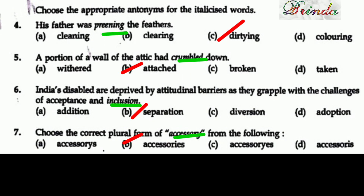Seventh question: Choose the correct plural form of 'accessory.' The options are: A-C-C-E-S-S-O-R-Y-S, A-C-C-E-S-S-O-R-I-S (first), A-C-C-E-S-S-O-R-Y-S (repeated), A-C-C-E-S-S-O-R-I-E-S. The correct answer is 'accessories' — A-C-C-E-S-S-O-R-I-E-S.